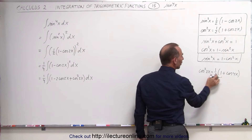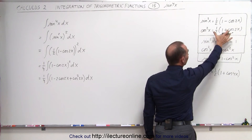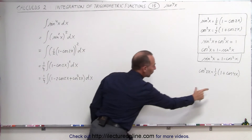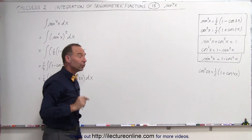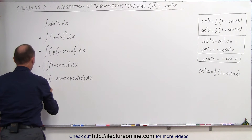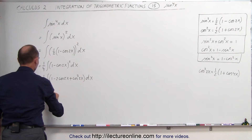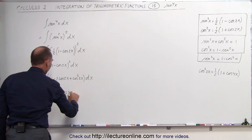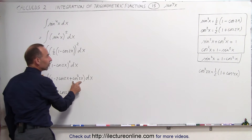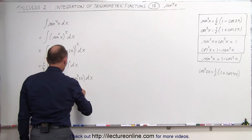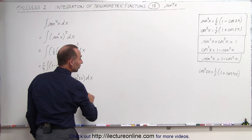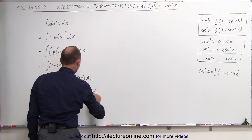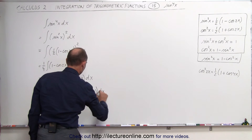Which means we can take this quantity and substitute it in. This is equal to one quarter times the integral of 1 minus 2 times the cosine of 2x plus one half times 1 plus the cosine of 4x, all times dx.